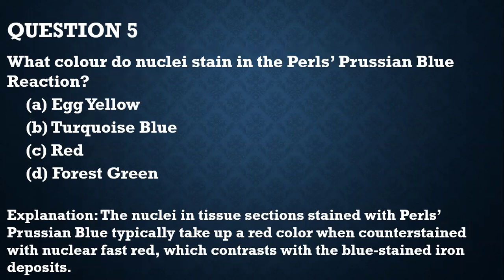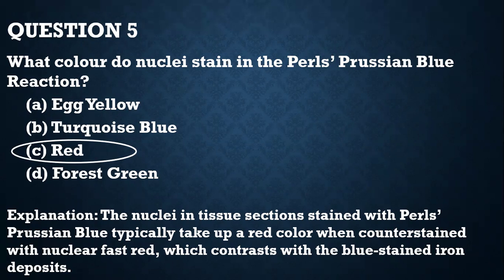Question 5. What color do nuclei stain in the Perl's Prussian Blue reaction? They stain red, unlike in H&E where nuclei stain blue. In this staining technique, the nuclei take up a red color when counterstained with nuclear fast red, which contrasts the blue-stained iron deposits.